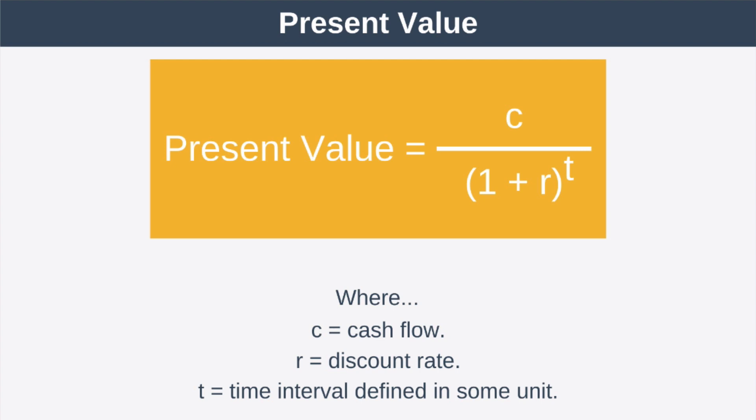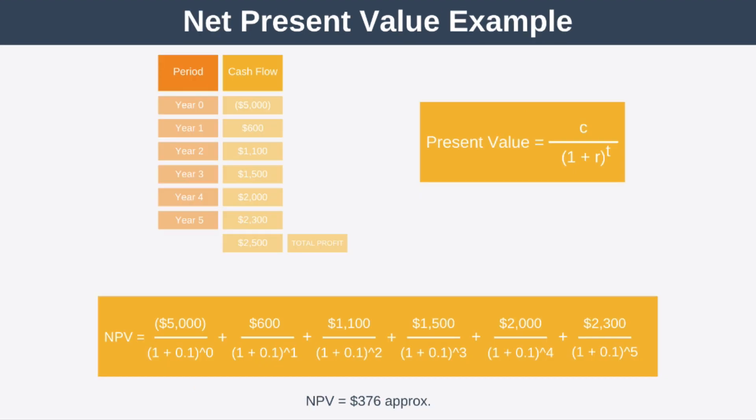So let's use this formula to calculate the net present value for our example. So on this image you can see here's the question we were asking, is this a good investment? Here we have our present value calculation, and what we've done below is calculate the net present value which we've worked out to be $376.